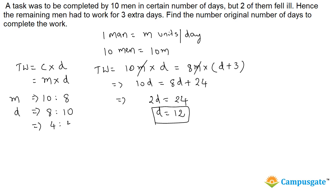We can again further simplify this which will get 4 is to 5. That means if original number of days are 4, then finally they are taking 5 days, one day extra. But it is given in the question that they are taking three extra days. So one part is given as three days.